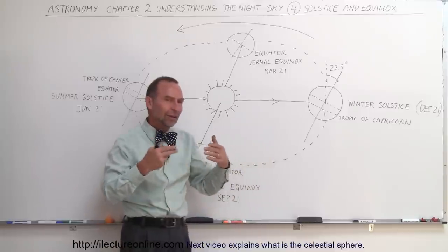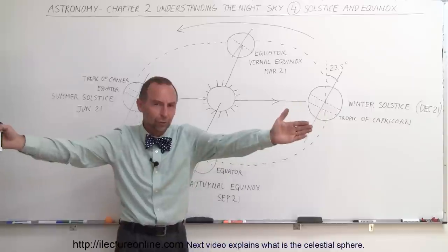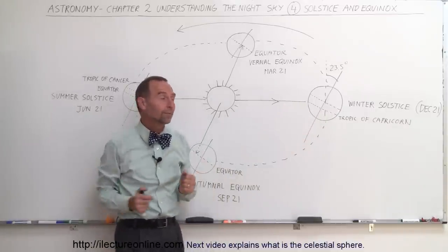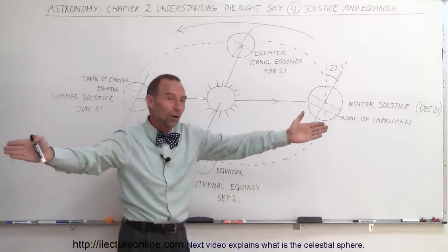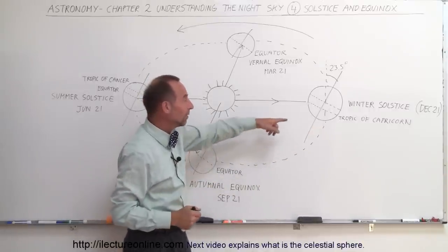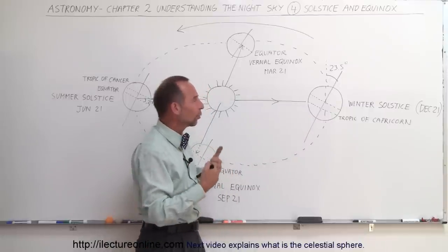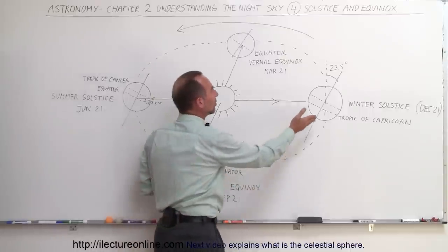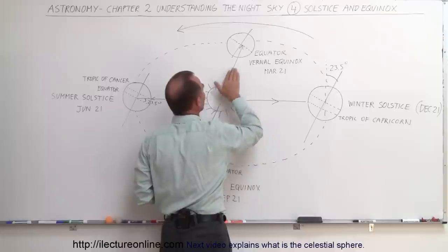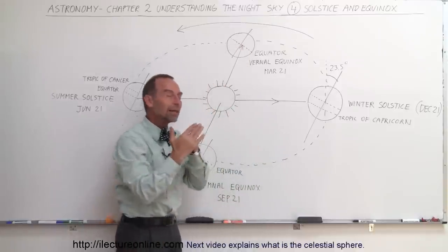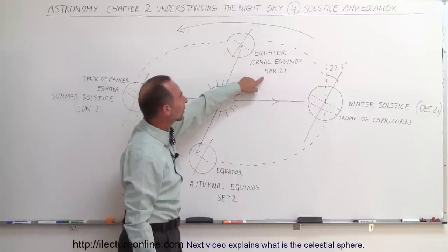People realized that where the sun rose and set in winter was much further north than in summer. They noticed that when the sun set and rose as far north as it ever went — on the first day of winter — that would be the beginning of a very cold period. Then as the earth continued to go around, the sunlight would strike the earth directly across from the equator, marking the first day of spring on March 21st.